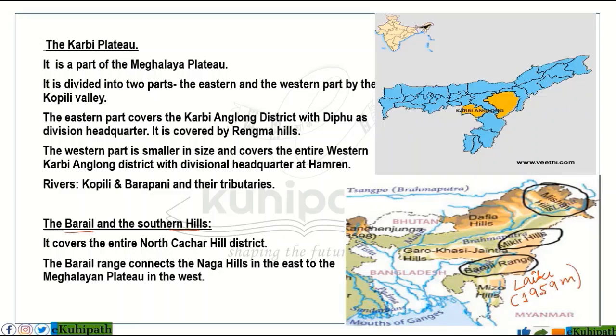An important point is the peak height of around 1,959 meters in the barrel range. This includes the eastern Naga Hills and the western Meghalaya Plateau features.